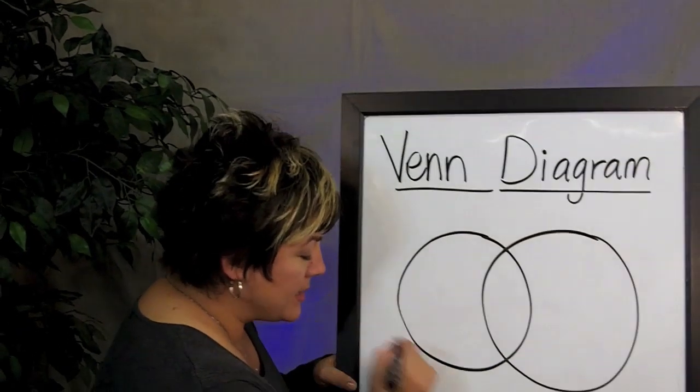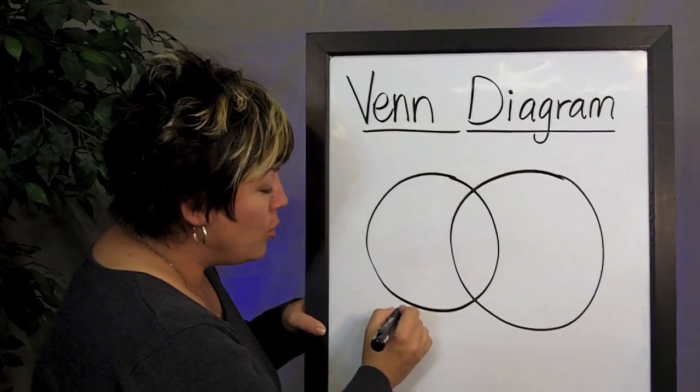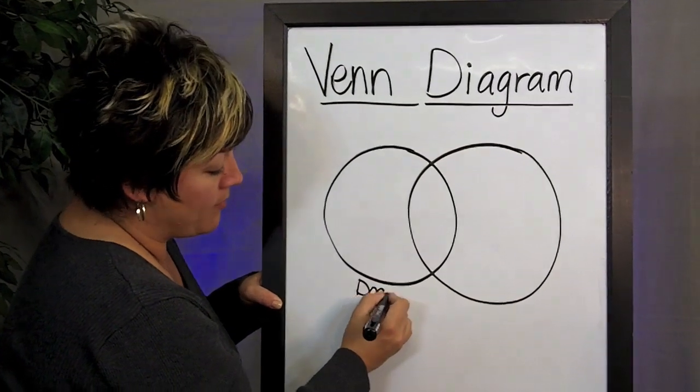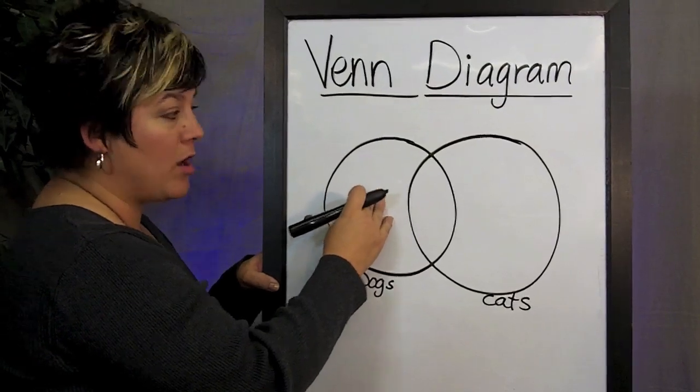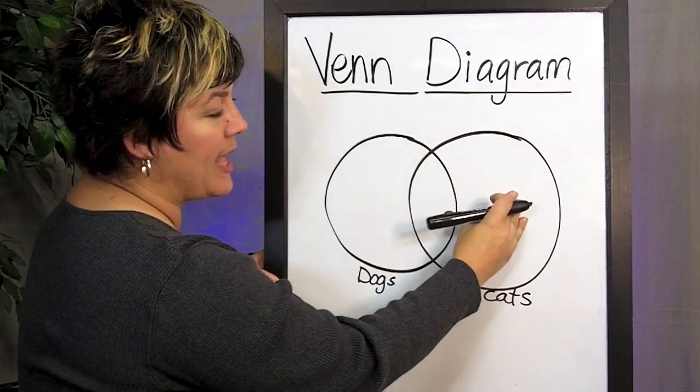For example, if I were to ask my students, who likes dogs and who likes cats, I would have some students that like dogs, and some students that like cats.